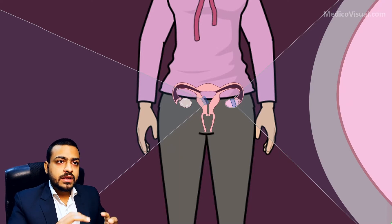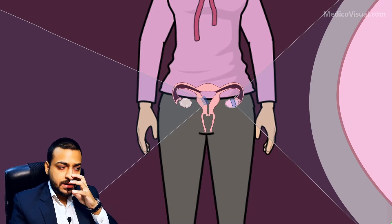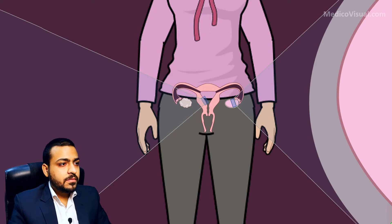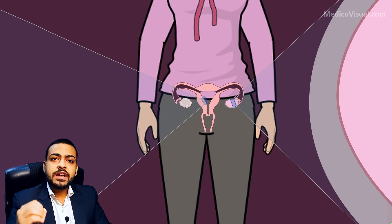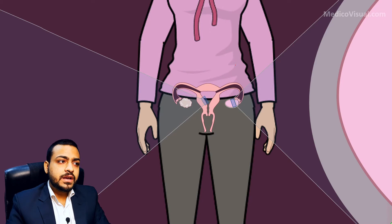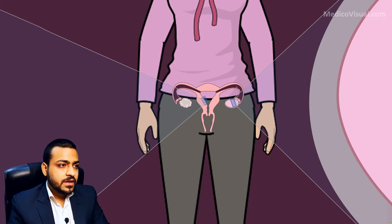Either the secondary oocyte that is released into the uterine tube may get fertilized, or it may not get fertilized. Let's first discuss what happens if it does get fertilized.